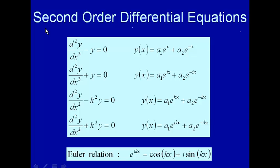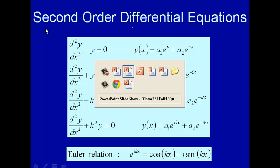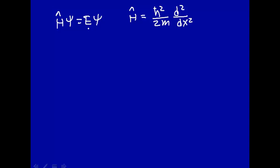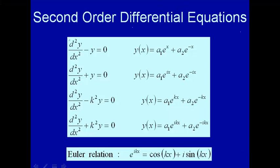In our study of quantum mechanics, we'll often come across differential equations. For example, if we look at the Schrödinger equation, H-psi equals E-psi, and suppose the system we're interested in has just kinetic energy, in that case the Hamiltonian operator is just h-bar squared over 2m times, in one dimension, the second derivative with respect to x squared. So if we operate on that function, we'll get a second order differential equation that we have to solve for the wave function and then get the energies. So let's first talk about differential equations before we actually go and solve those.